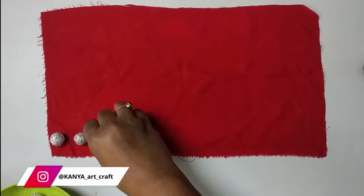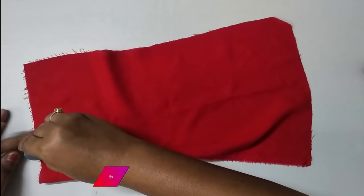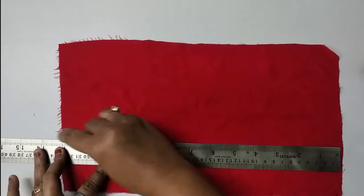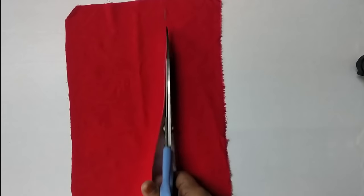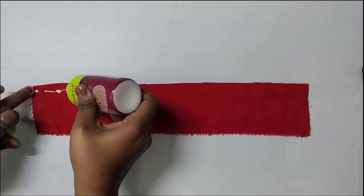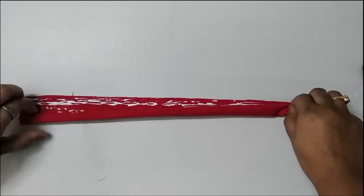Taking a red cotton fabric, the length should be approximately 10 inches. Now I am marking 2 and a half inches and cutting it following the line. Applying glue on one side then folding the fabric twice to stick it.